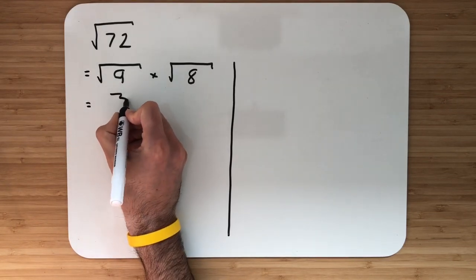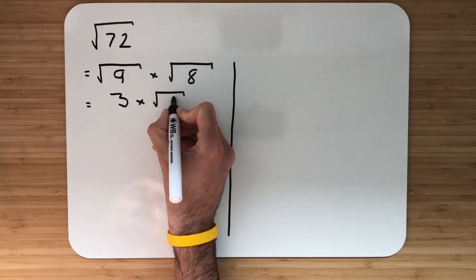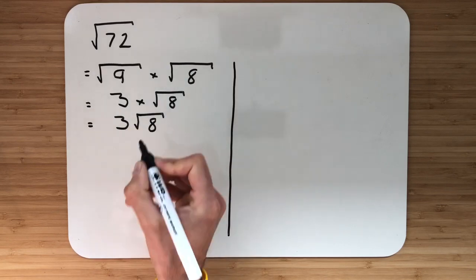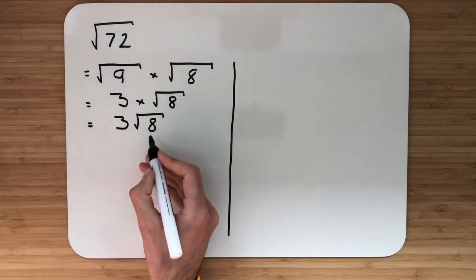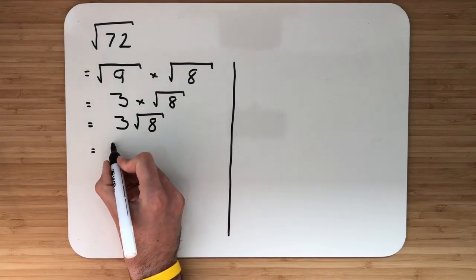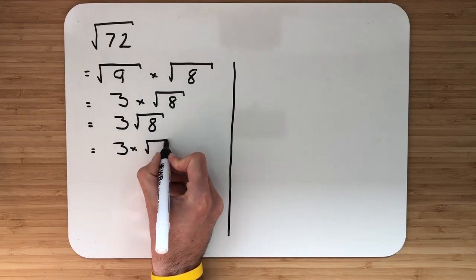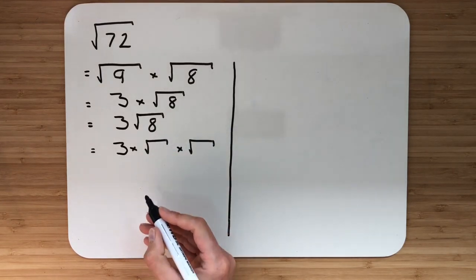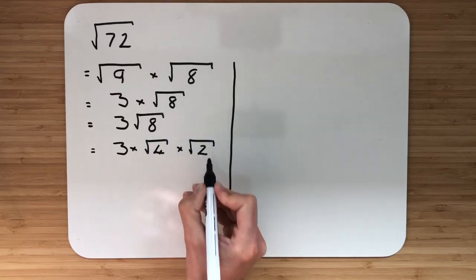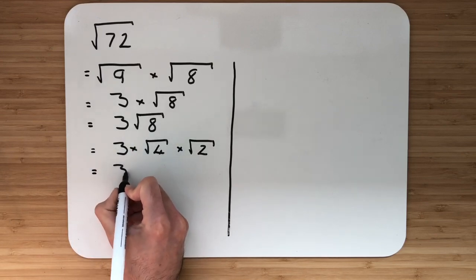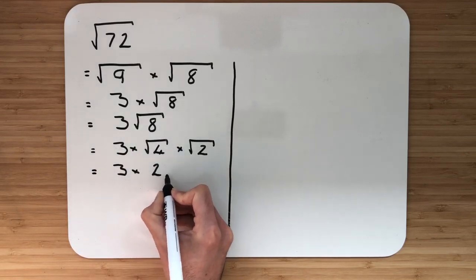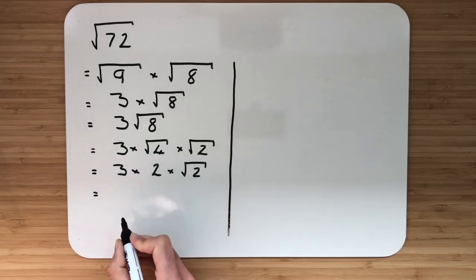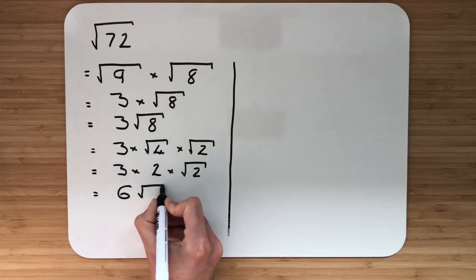Simplifying down, we get 3 multiplied by root 8, which is 3 root 8. However, root 8 — if you look at your previous examples — can be further simplified. So from there we have 3 multiplied by root 4 multiplied by root 2, since 4 and 2 multiply to give 8 and 4 is a square number. That gives us 3 multiplied by 2 multiplied by root 2. Finally, simplifying: 3 multiplied by 2 is 6, giving us 6 root 2.